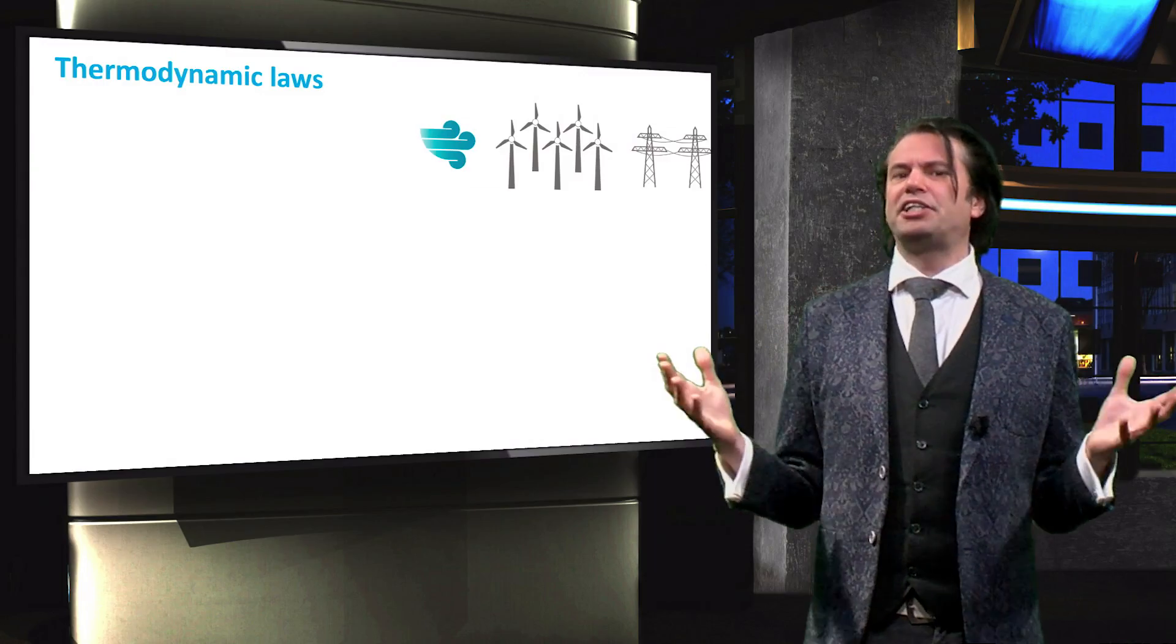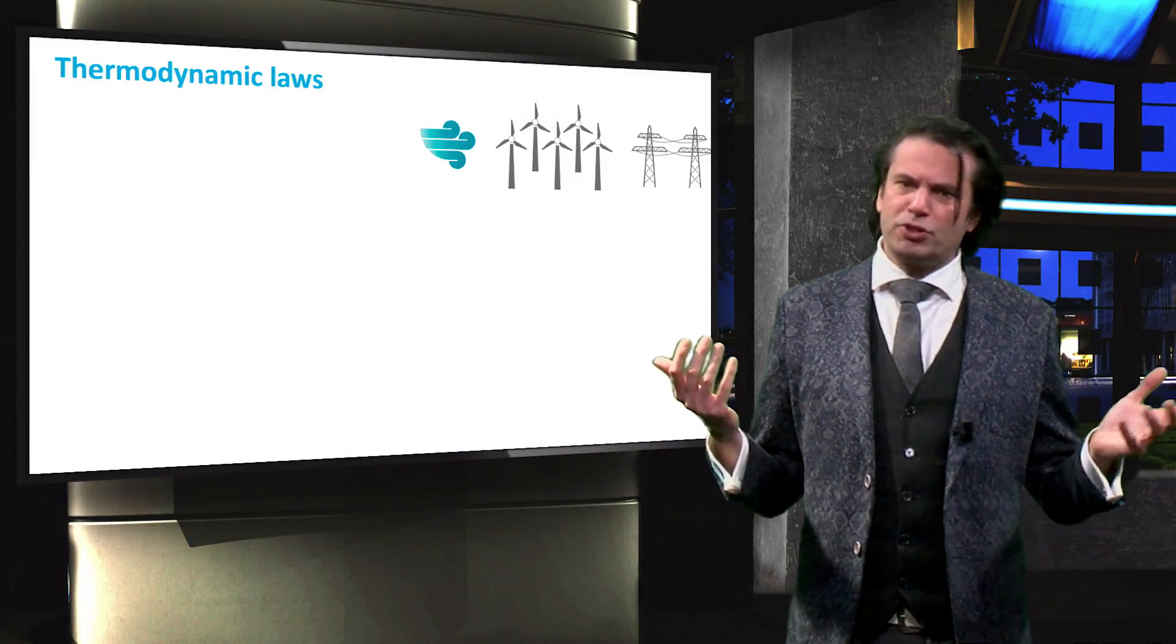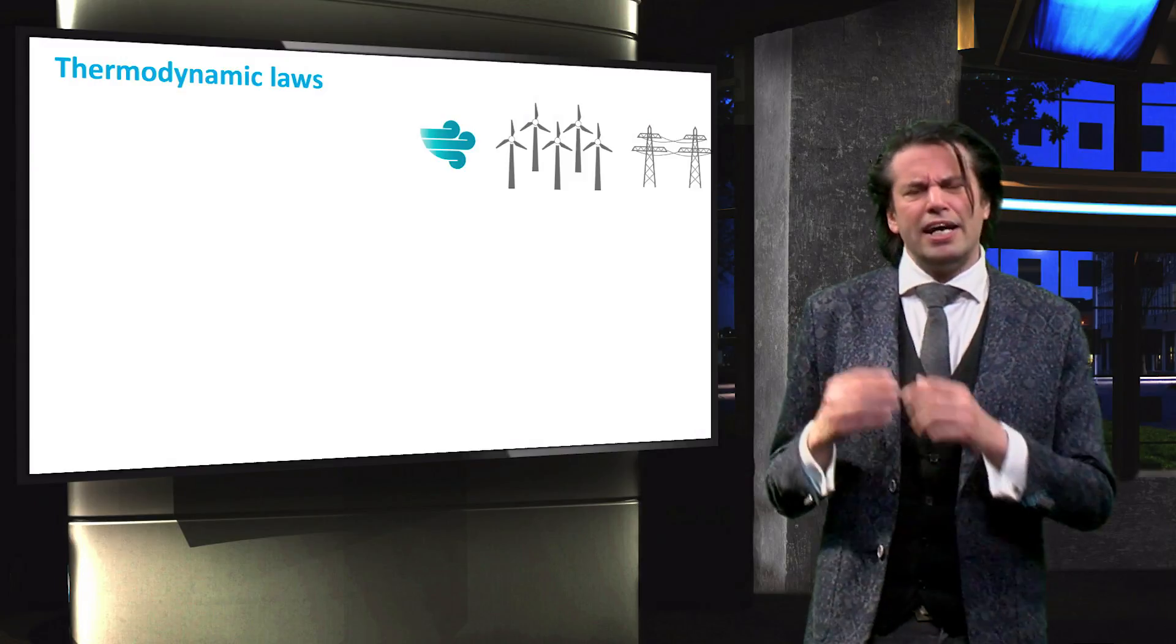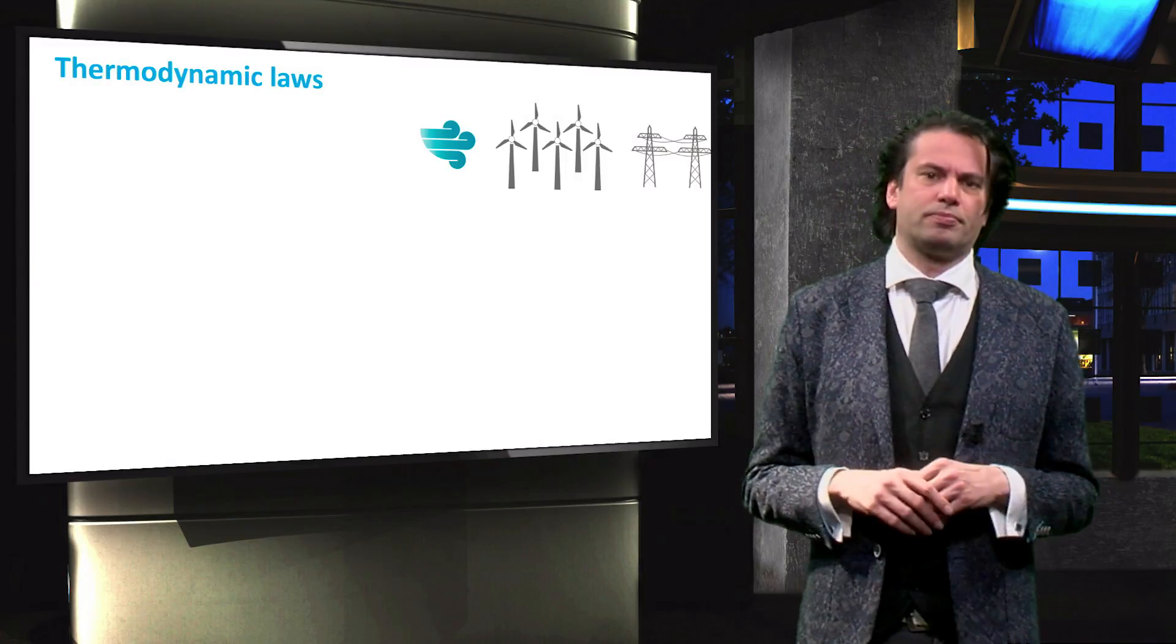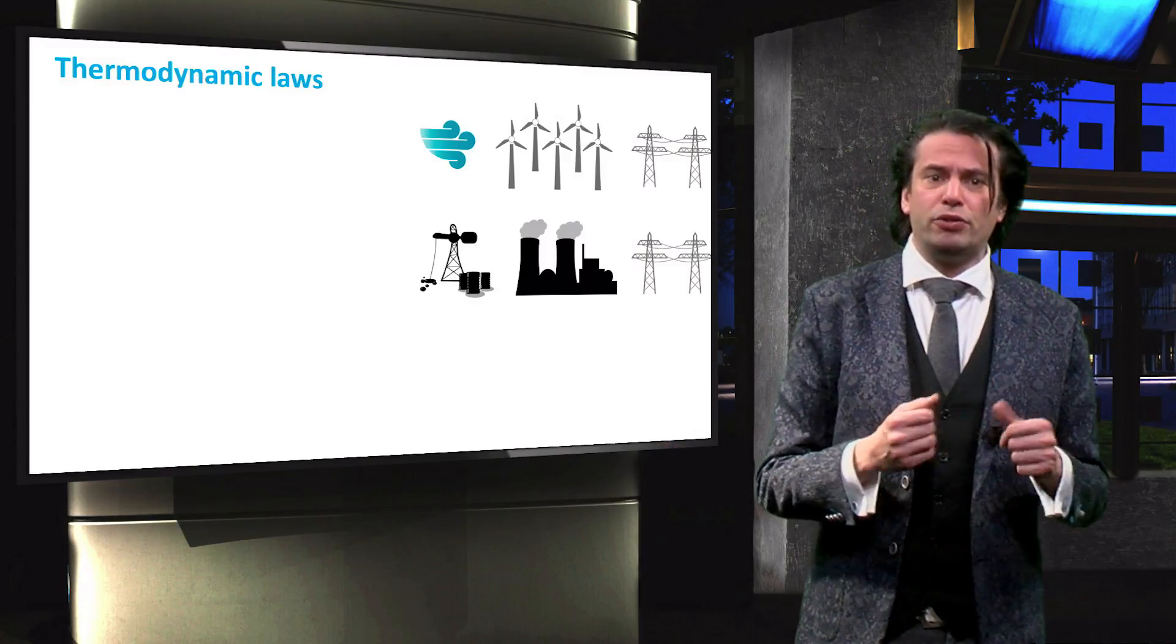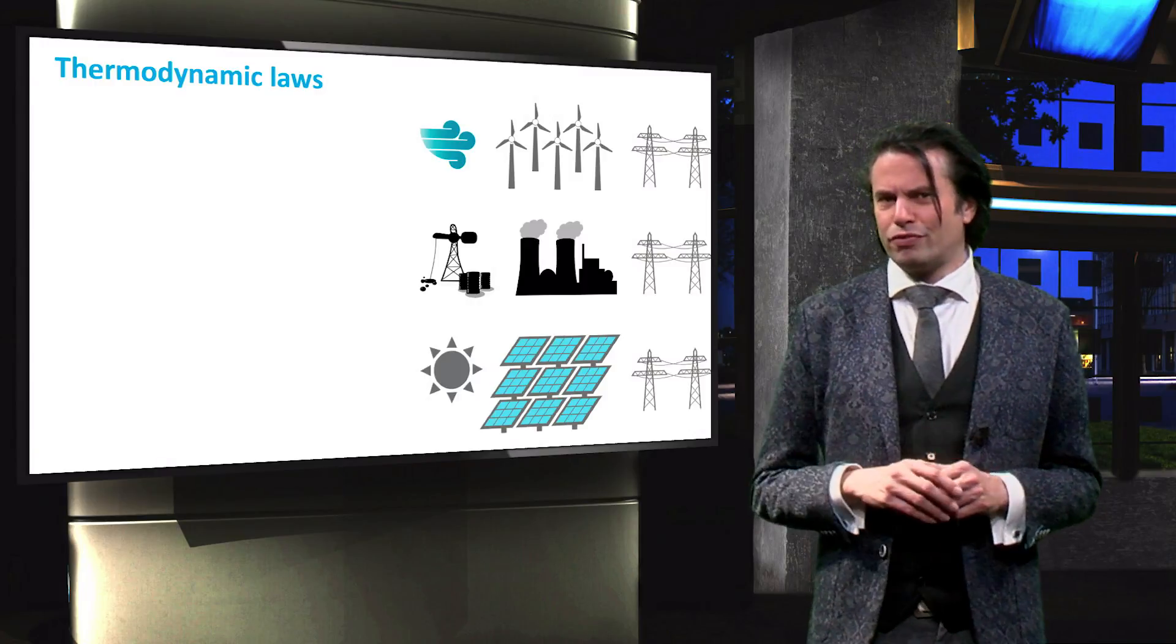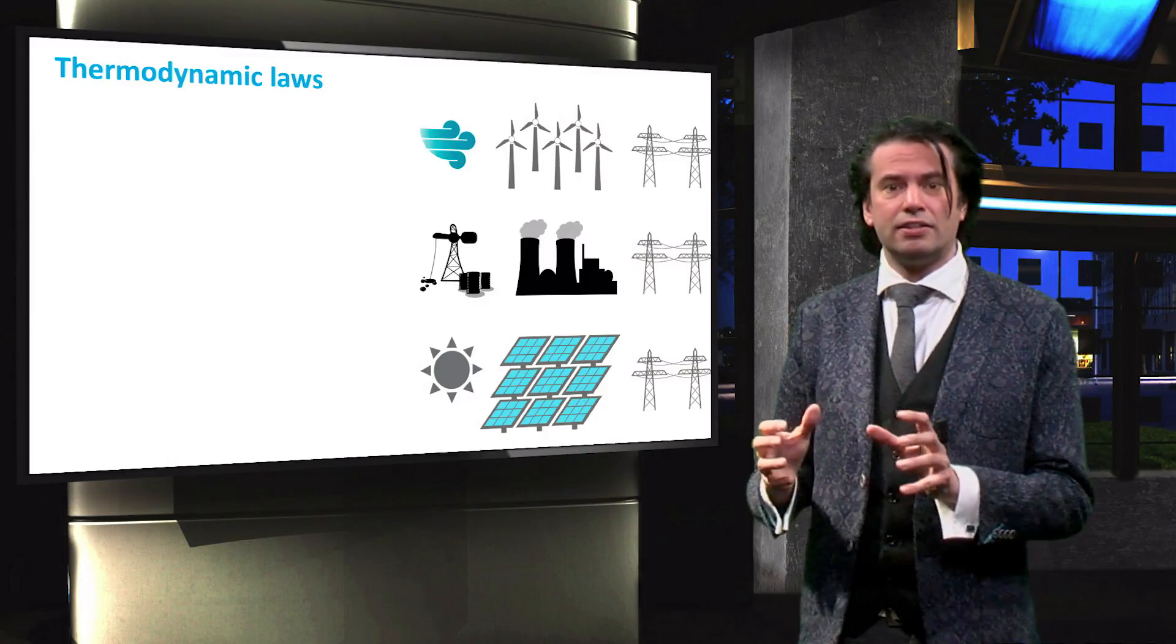We discussed how energy can be converted from one form into another form. Practical examples are wind turbines that convert the kinetic energy contained in the particle flow that we know as the wind into mechanical energy, which is then converted into electrical energy. Chemical energy stored in fossil fuels are converted into thermal energy, which is in turn converted into mechanical energy and finally electrical energy. Solar cells convert the energy contained in electromagnetic radiation directly into electrical energy.